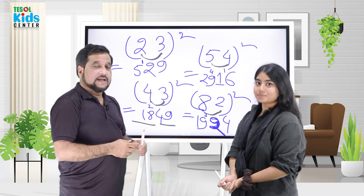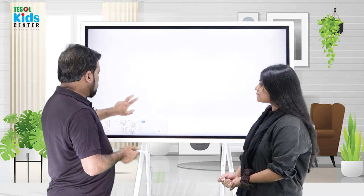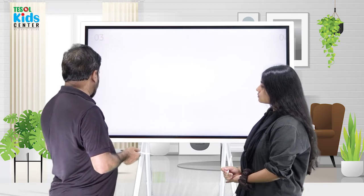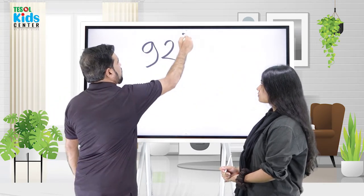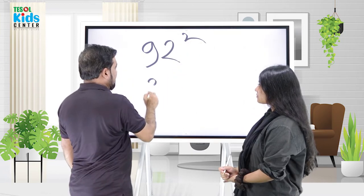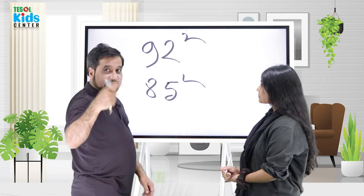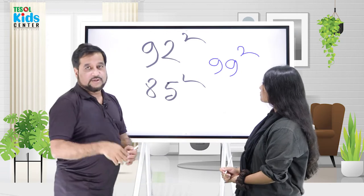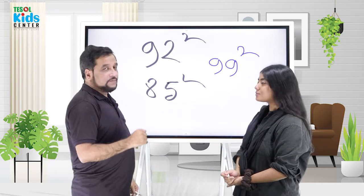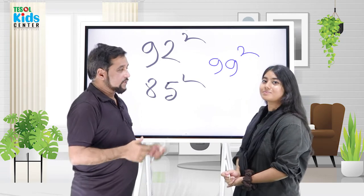How about 92 squared? How about 85 squared? How about 99 squared? So this is homework. What is the result? And I hope you liked our video.